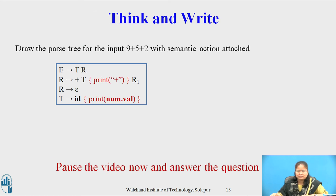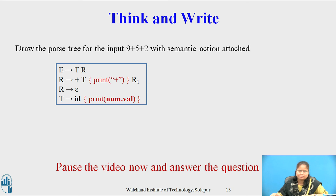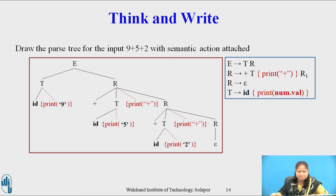So, we have now covered the L-Attributed Definition. Pause this video, reflect on this question for a minute or two, and write your response. Once you have written your answer, you can restart the video. The question is: draw the parse tree for the input 9 + 5 + 2 with the semantic actions attached to it. The depth-first traversal of the parse tree, executing the semantic actions in that order as shown on this slide, will produce the postfix representation 9 5 + 2 + of the infix expression 9 + 5 + 2.